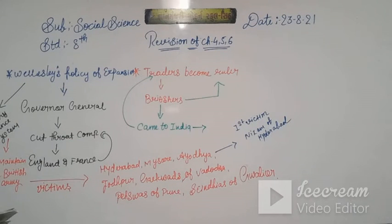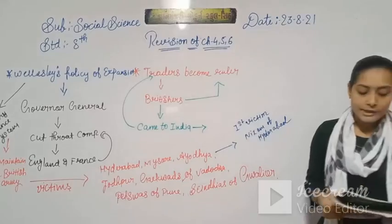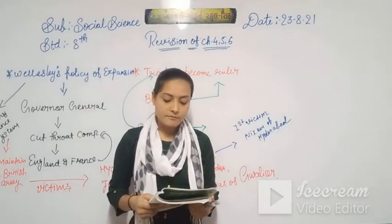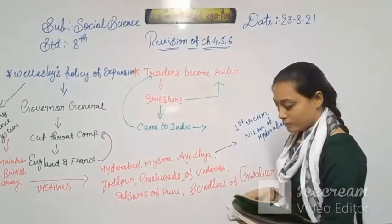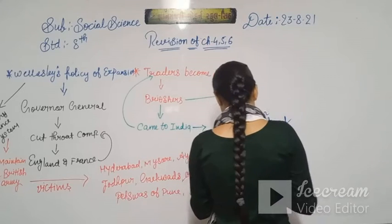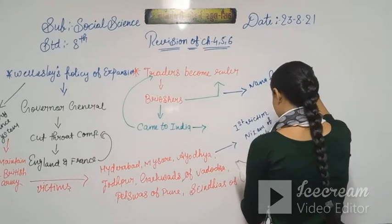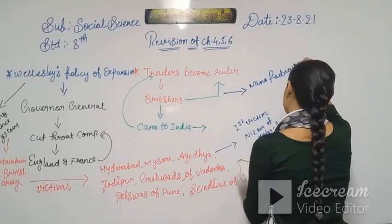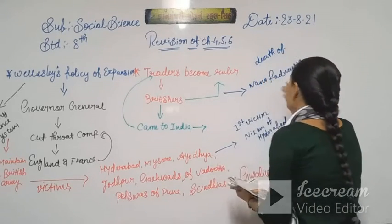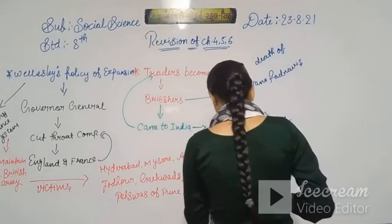Then Tipu Sultan of Mysore refused to do so. But after the British victory in the Fourth Anglo-Mysore War, Mysore was supposed to become a subsidiary state. The Marathas were at court among themselves. And within the Marathas, there was the death of Nana Phadnavis. After the death of Nana Phadnavis, then what happened? The whole Maratha situation changed.